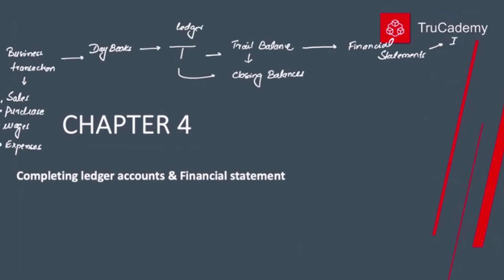At the FA1 course level, we need to learn how to prepare two financial statements: the income statement and the balance sheet. In case the trial balance doesn't balance — meaning both the debit and credit sides are not equal to each other — we cannot prepare the financial statements.